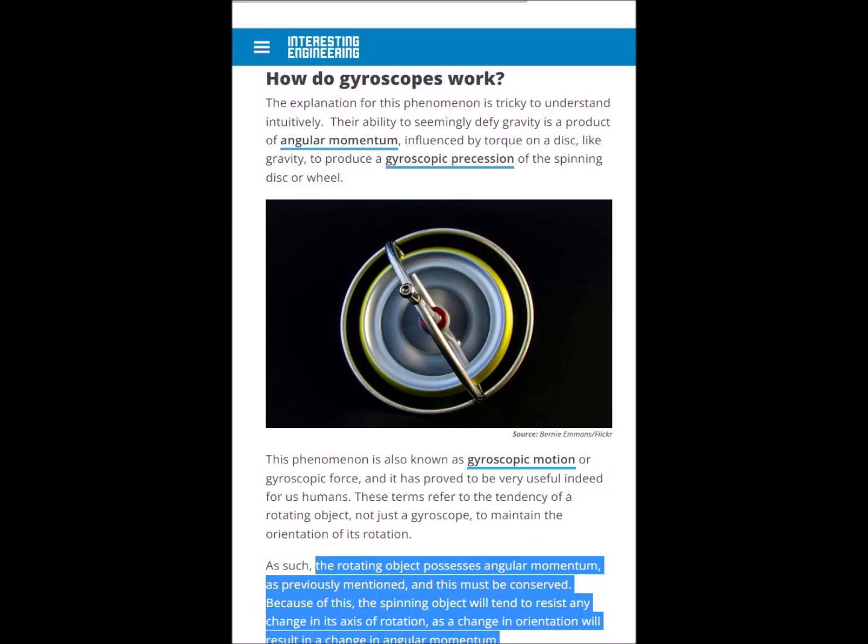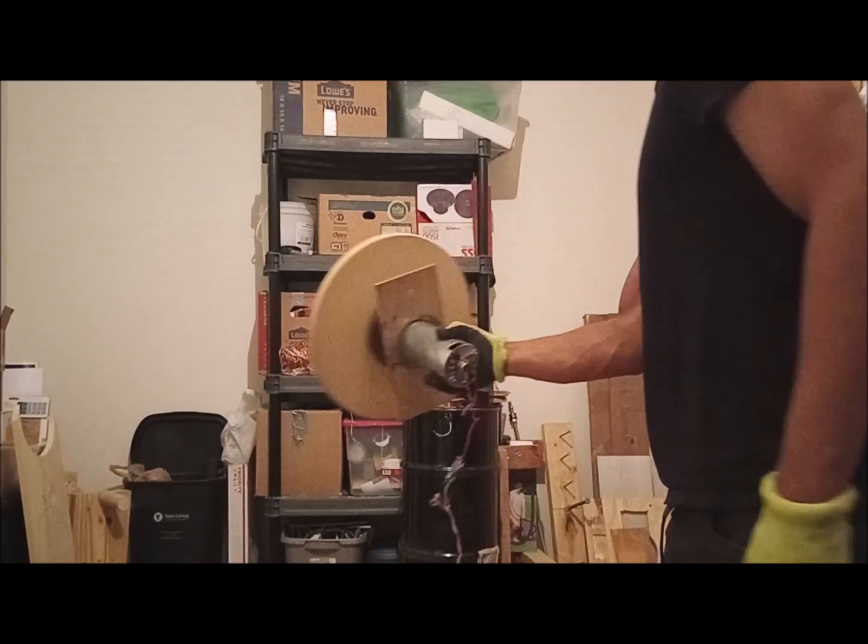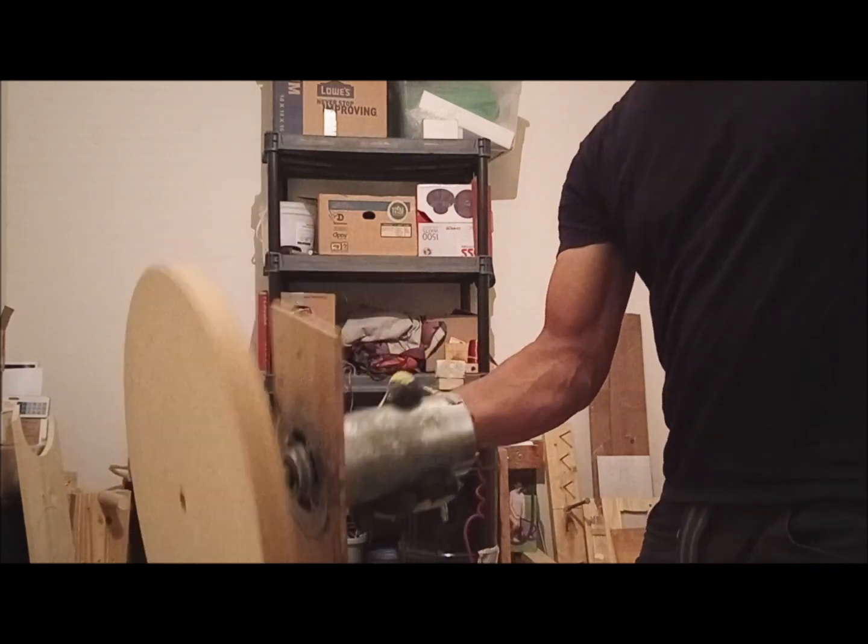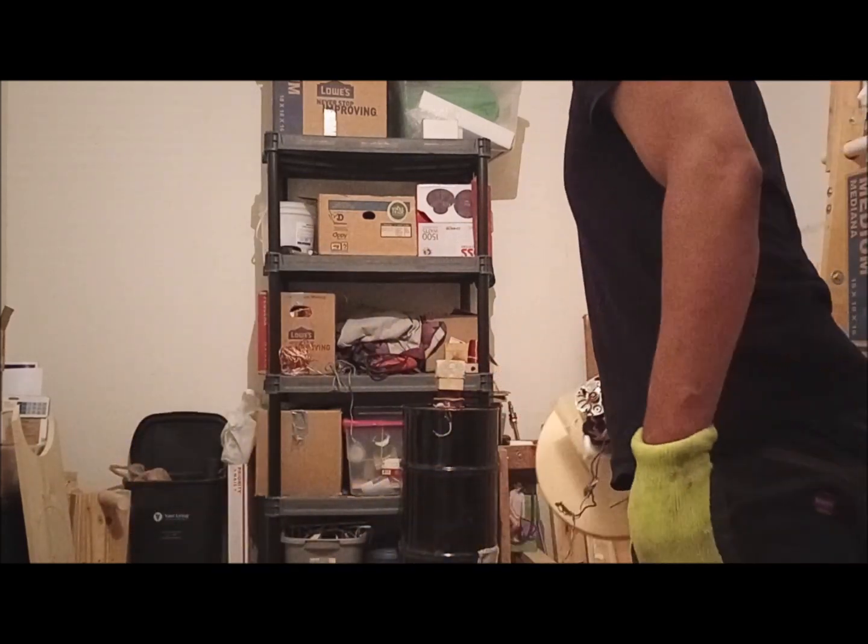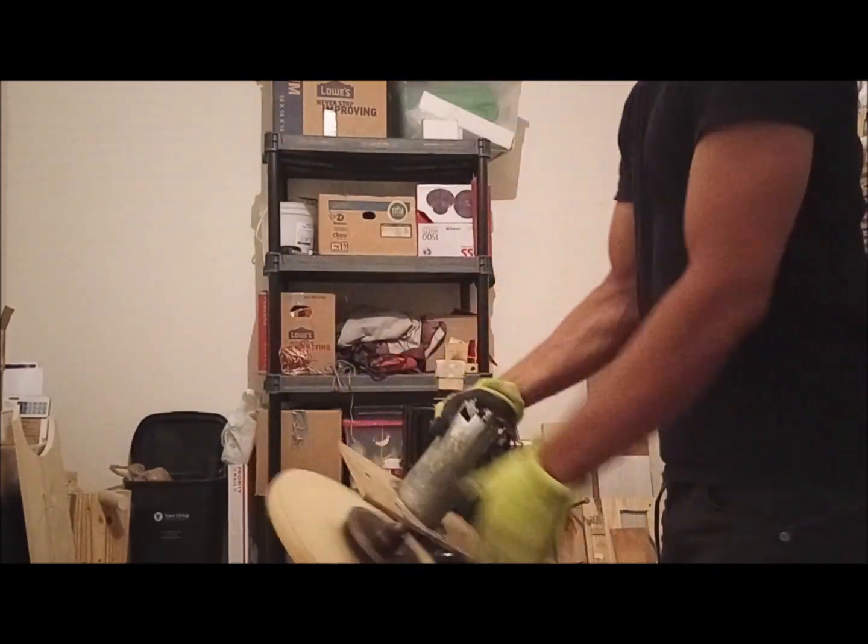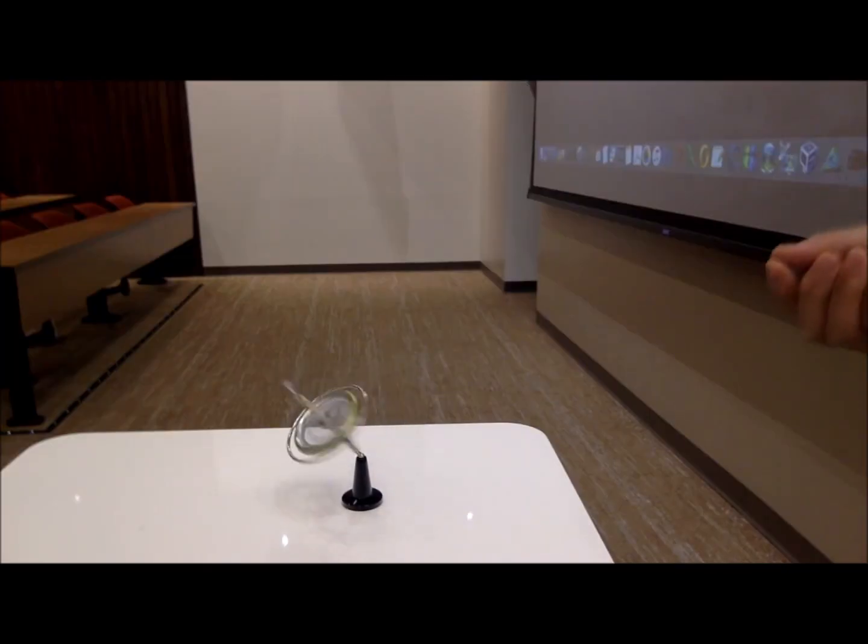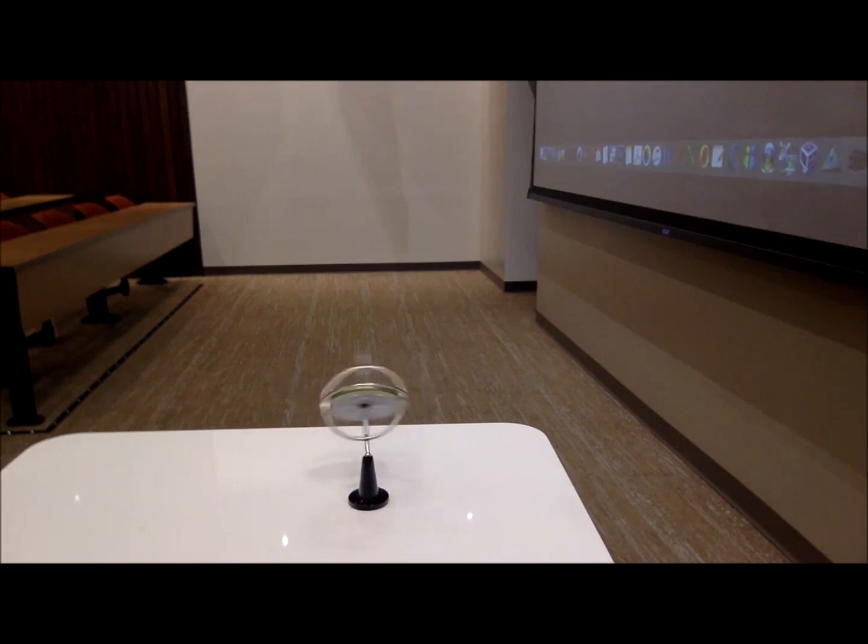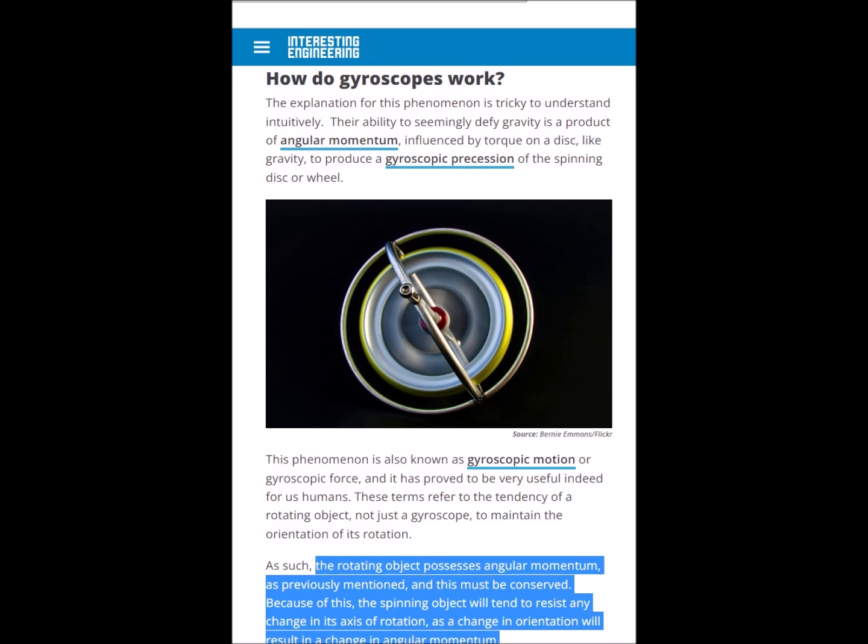This is what gives gyroscopes and flywheels their peculiar pseudo antigravity like properties. Handling a heavy rotating mass is an interesting sensation and if mounted properly can result in precession due to conservation of angular momentum and inertia. It should be very similar to what actual antigravity and supergravity effects will feel like even though technically the gravity of ordinary spinning objects is not being modified.